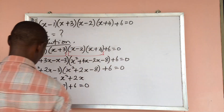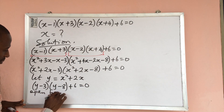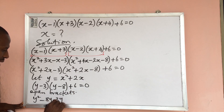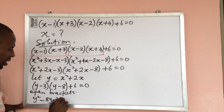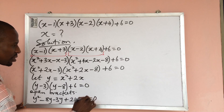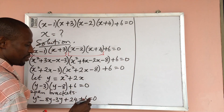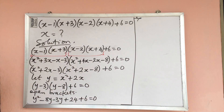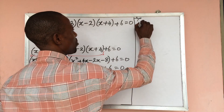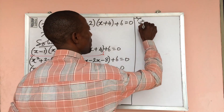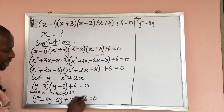Opening these brackets gives y² − 8y − 3y + 24 + 6 = 0. Combining like terms: −8y − 3y = −11y, and 24 + 6 = 30. So we have y² − 11y + 30 = 0.